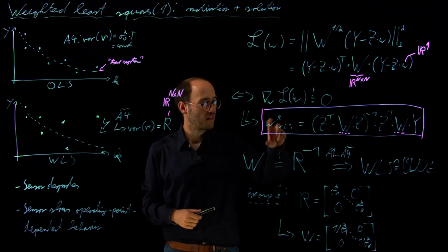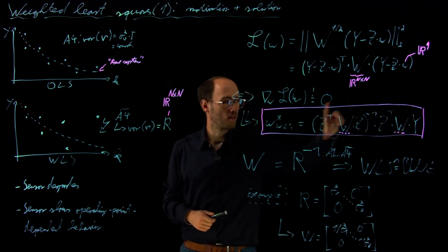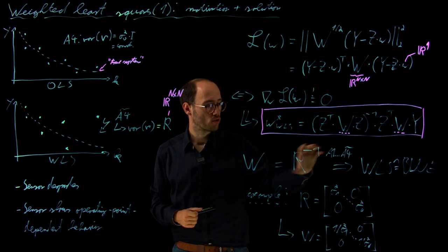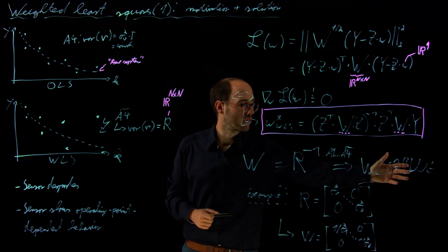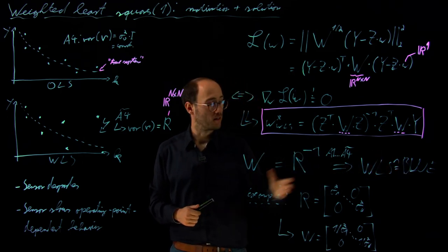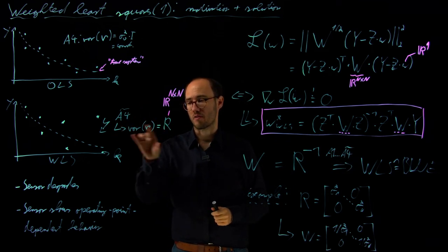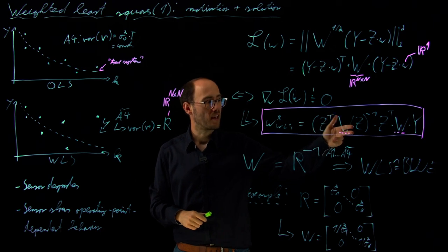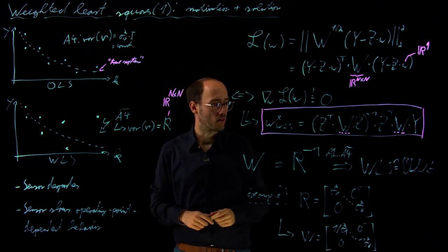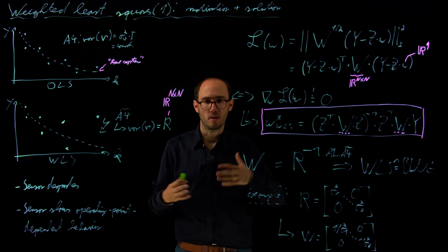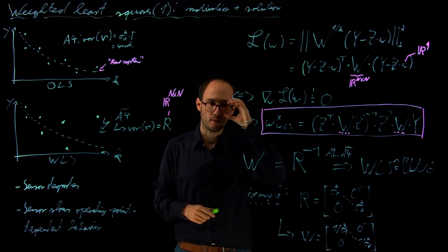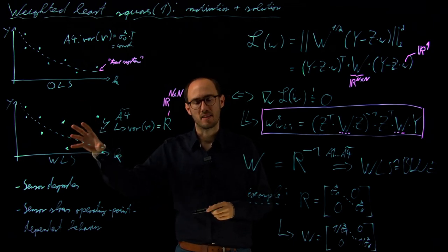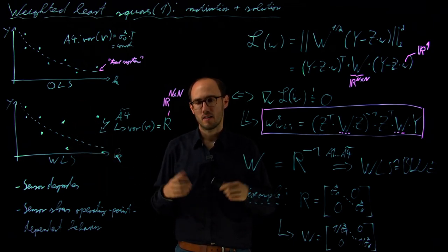However, of course, this solution of the weighted least squares is independent of this choice. So this choice, which I've sketched here, leading to this BLUE property, is just with respect to my motivational problem here. Of course, in a practical manner, you can take W also in other ways. For example, if you have an application-specific weighting problem where you say, okay, given my application, I want that certain samples have more weights than others.